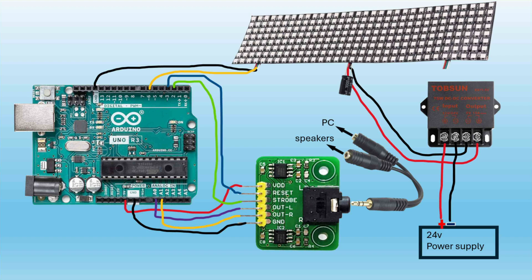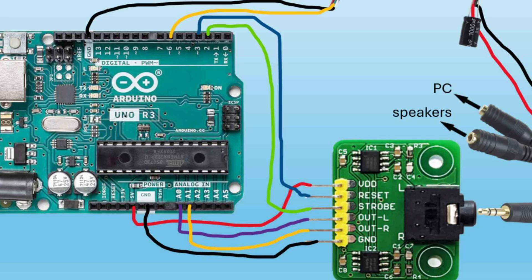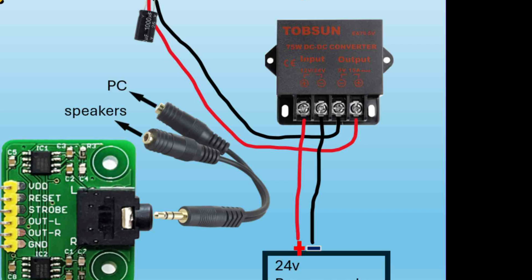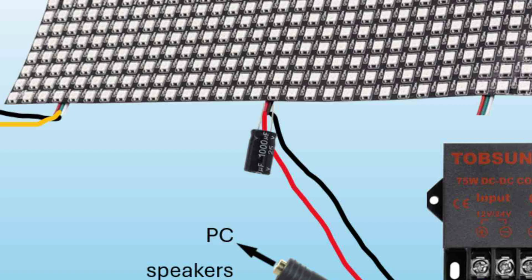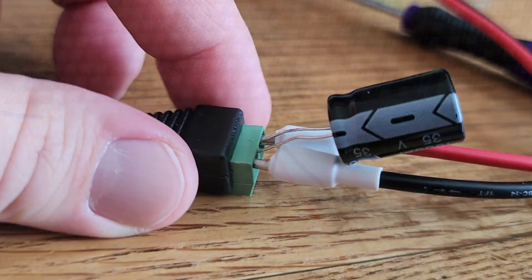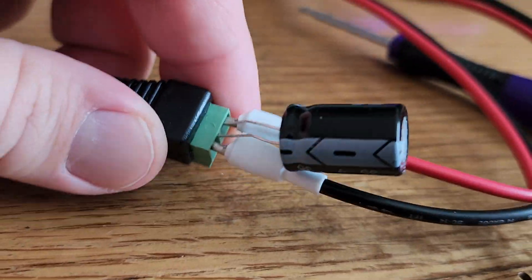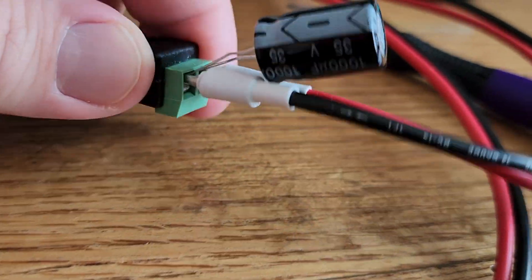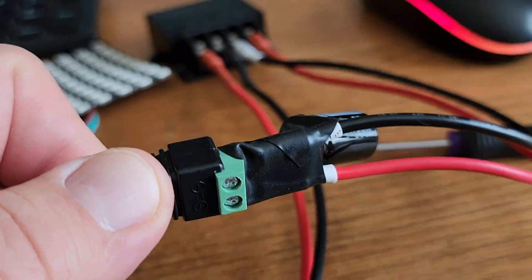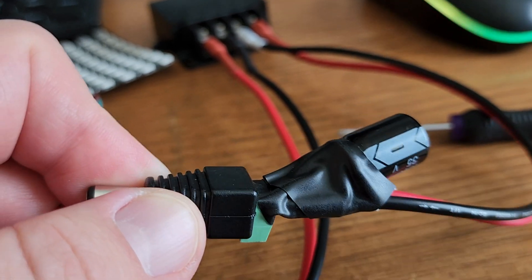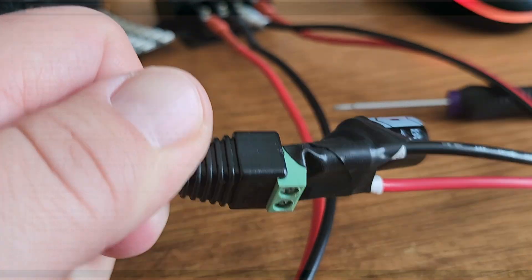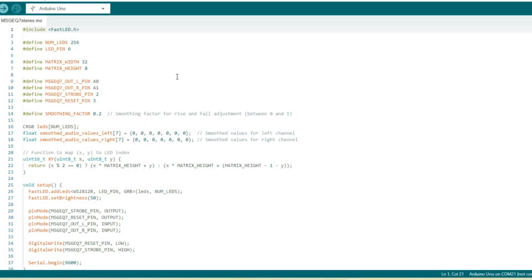Here's a wiring diagram if you need it, along with some close-ups. It's a good idea to place the capacitor as close as possible to the connection point where the 5V power lines enter the LED matrix. This helps smooth out voltage stability and protect your LEDs.